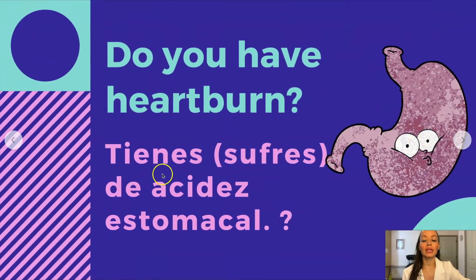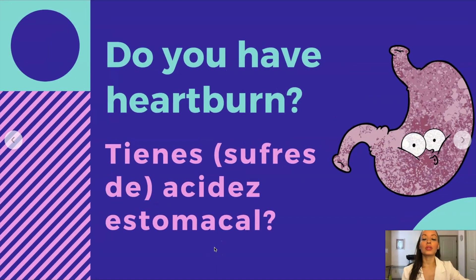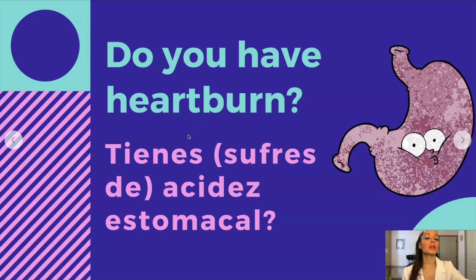'Do you have heartburn?' — for this one you can say either 'do you have' or 'do you suffer from.' 'Do you have heartburn?' is '¿Tienes acidez estomacal?' In Spanish, we don't call it heartburn — we literally call it stomach acidity. 'Do you suffer from heartburn?' is '¿Sufres de acidez estomacal?'